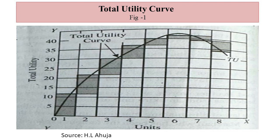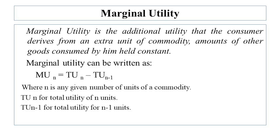Marginal utility is different from total utility. Total utility is the total satisfaction a consumer gets from consuming a number of units of a commodity. For the analysis of consumer's choice, economists focus on marginal utility. Marginal utility is the additional utility that a consumer derives from an extra unit of a commodity, while the amount of other goods consumed is held constant. Marginal utility can be written as MU(N) = TU(N) − TU(N−1), where N is the number of units consumed.